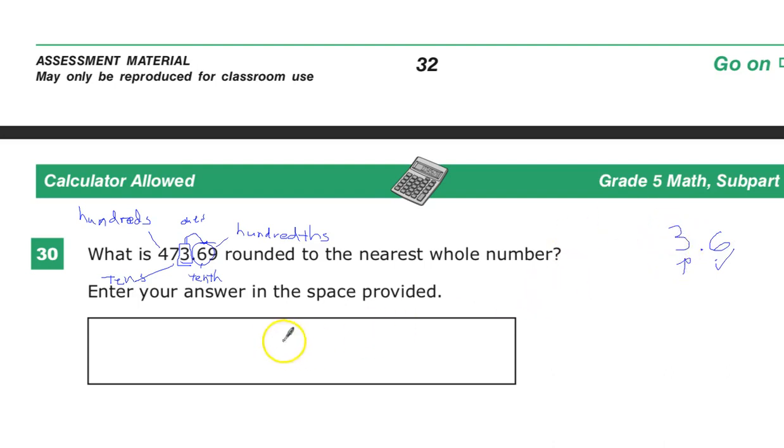So this goes up. And the number above three is, of course, four. So it becomes four seventy-four.